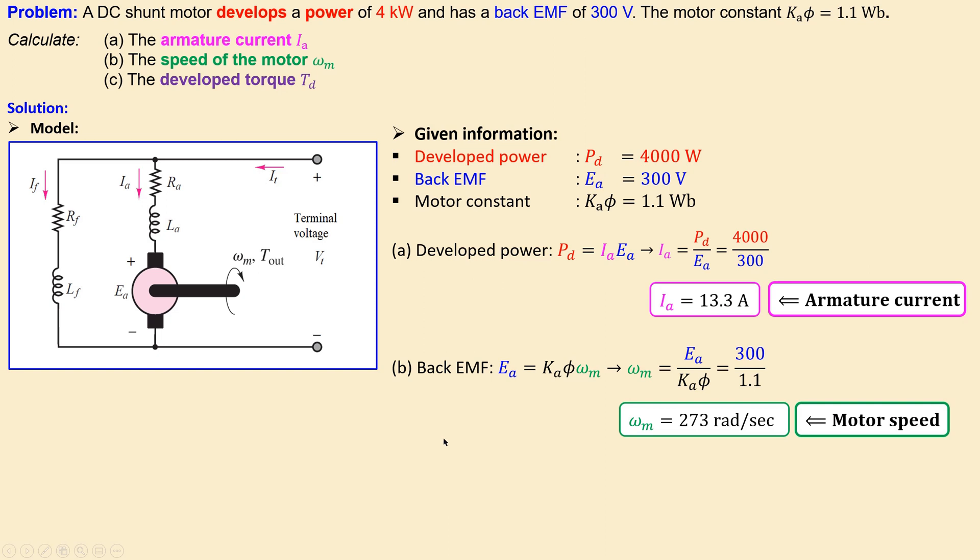The final one is the developed torque. So developed torque is given by this formula. Again the motor constant and we have now the armature current. Now we know the motor constant and the armature current we already have calculated in question a. So if you use these two values you will get 14.7 newton meters.